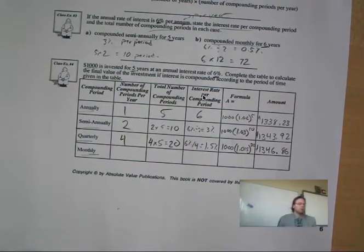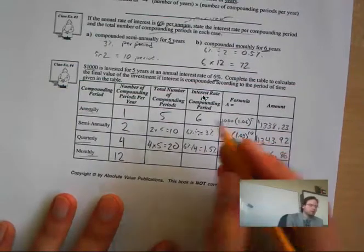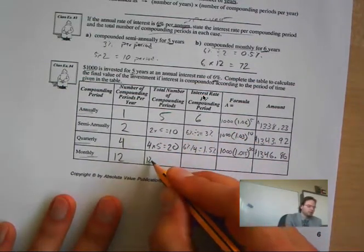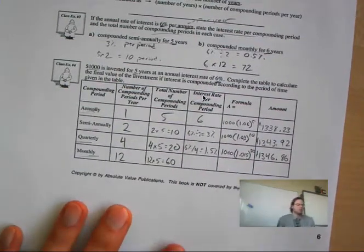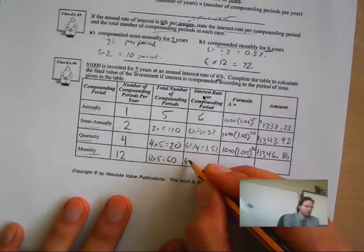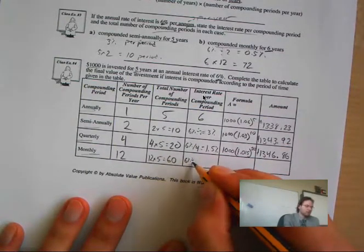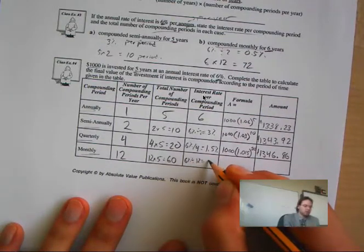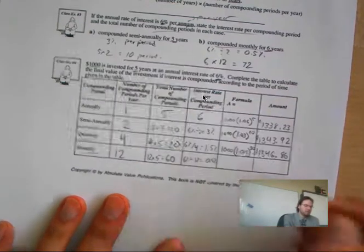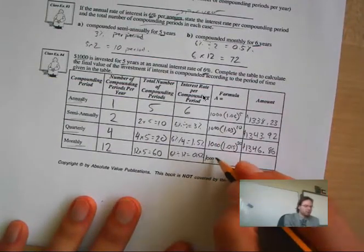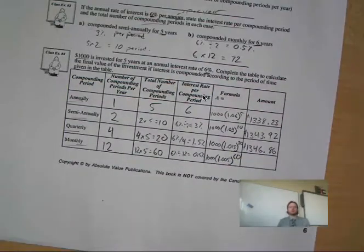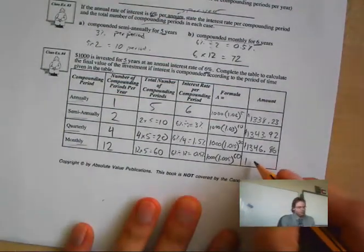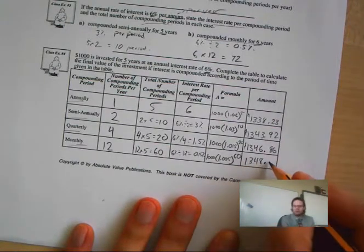Let us take a look at the last one: monthly. There are 12 periods per year, so in five years we have 60 total periods. Six percent divided by 12 is 0.5%. So I multiply $1,000 by 1.005 to the power of 60. Putting that in the calculator, I end up getting $1,348.85.